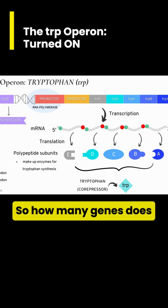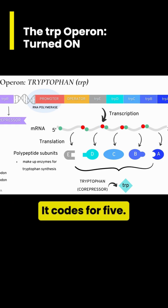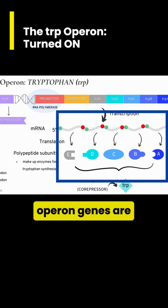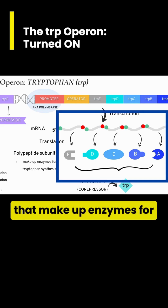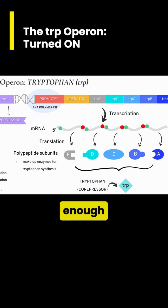So how many genes does this mRNA code for? It codes for five. Following transcription, operon genes are translated by ribosomes into polypeptide subunits that make up enzymes for tryptophan synthesis.